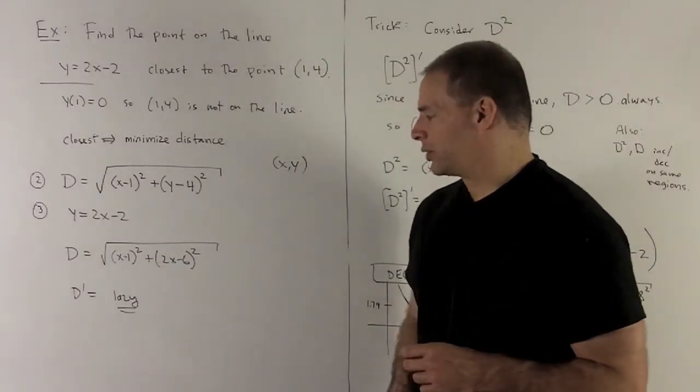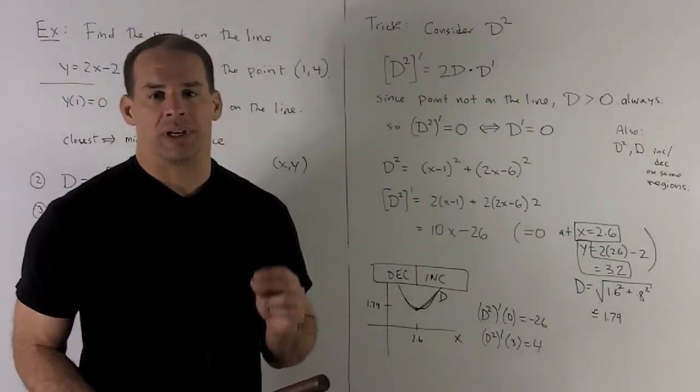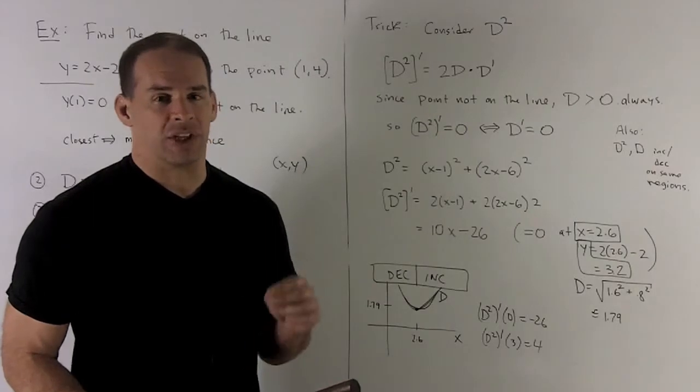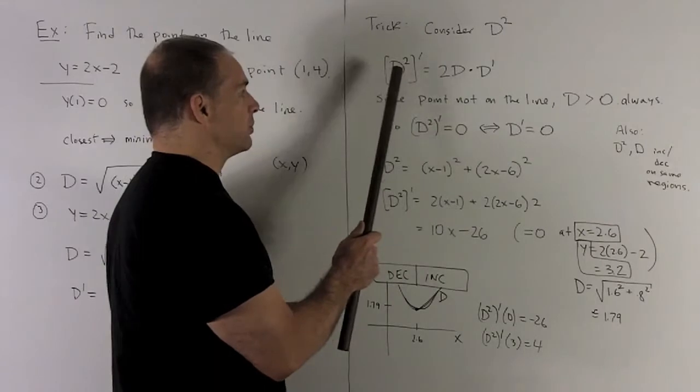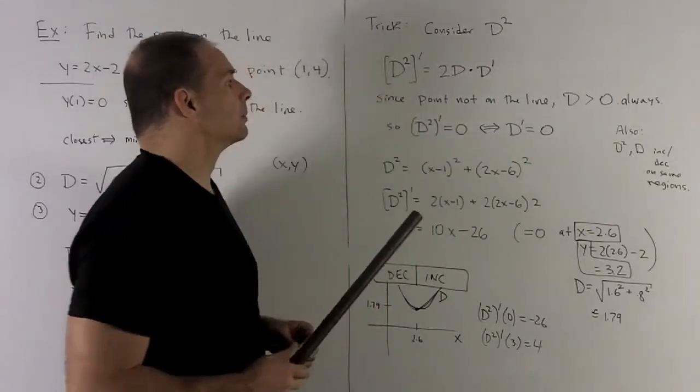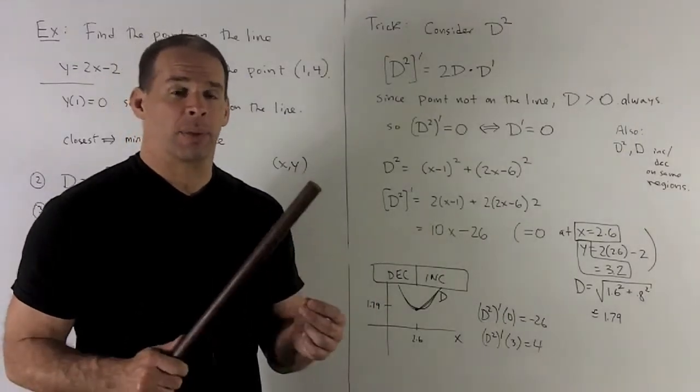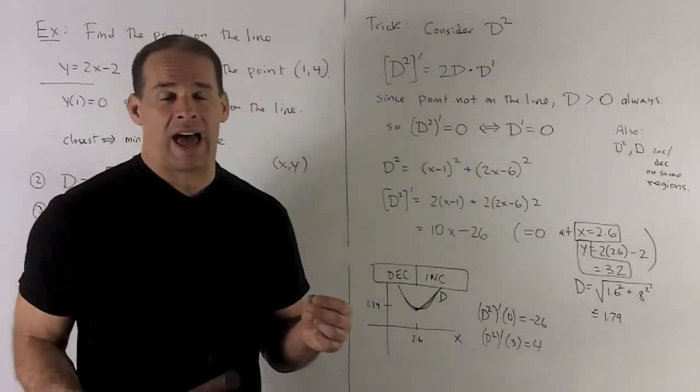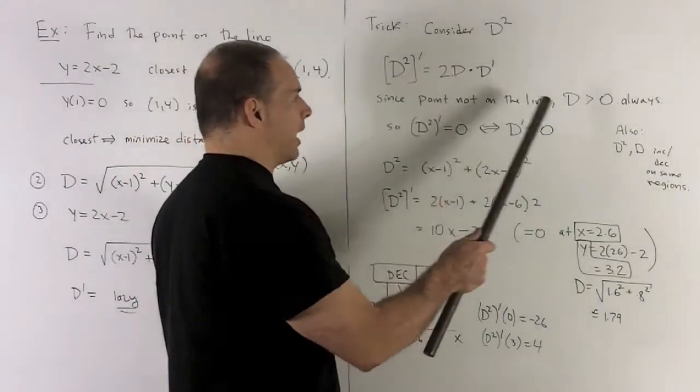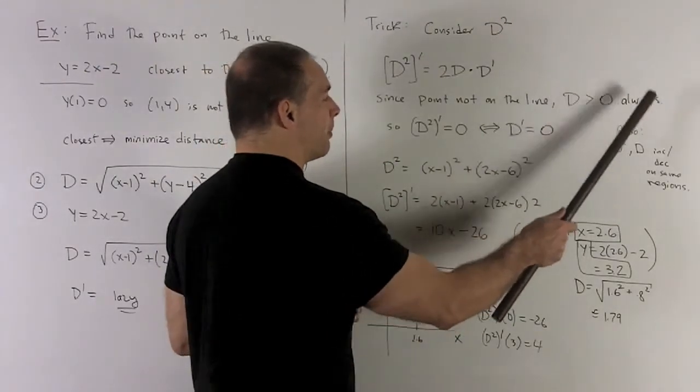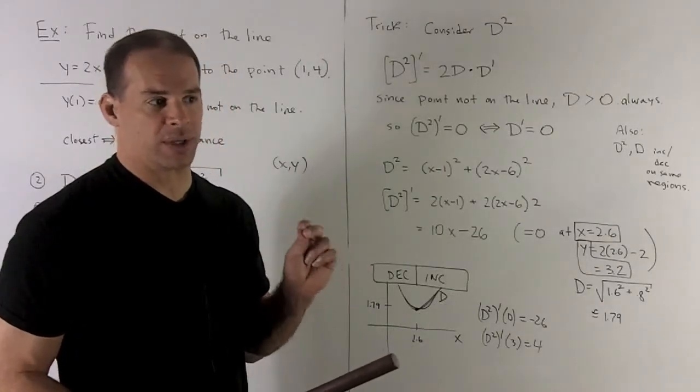But I'm too lazy to do something like this which has the chain rule in it. Let's look at the trick. I want to consider d squared. By the chain rule, the derivative of d squared is going to be 2d, and then times derivative of the inside which is d prime. Since my point is not actually on the line, the distance from the point to any other point on the line is always going to be bigger than zero. So I don't have to worry about d actually wind up being equal to zero. And in fact, d is always a positive number. It's a distance. So it's a distance that's not equal to zero exactly.